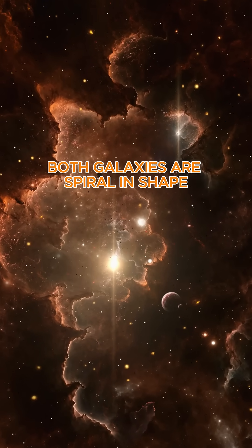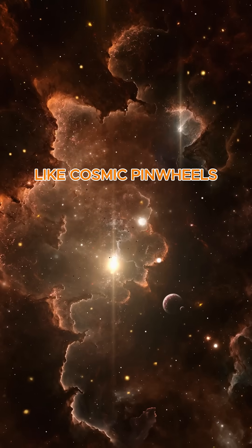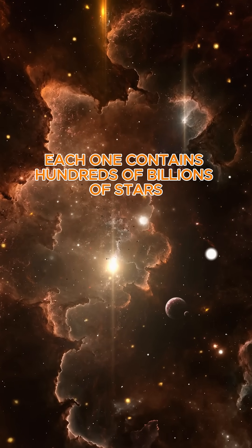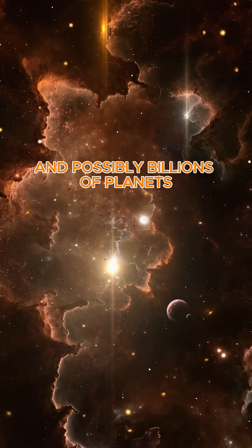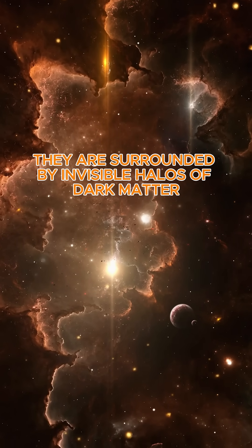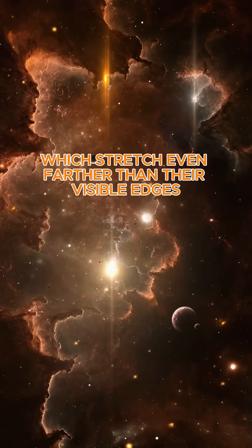Both galaxies are spiral in shape, like cosmic pinwheels. Each one contains hundreds of billions of stars, and possibly billions of planets. They are surrounded by invisible halos of dark matter, which stretch even farther than their visible edges.